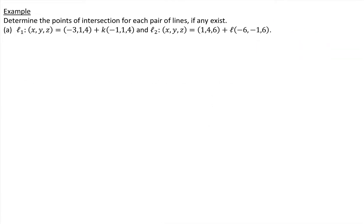Our example: determine the points of intersection for each pair of lines, if any exist. First, let's take a look at the direction vectors. Before calculating the point of intersection, we note that these lines are not parallel because their direction vectors are not scalar multiples of each other — negative one, one, four does not equal a scalar of negative six, negative one, and six. This tells us the lines either intersect at a point or are skew lines.